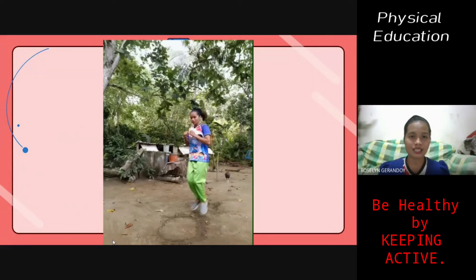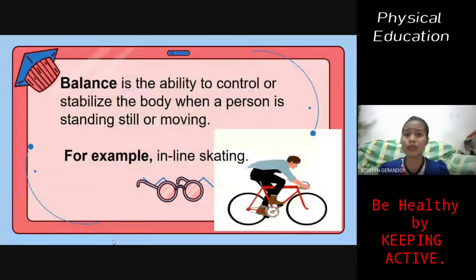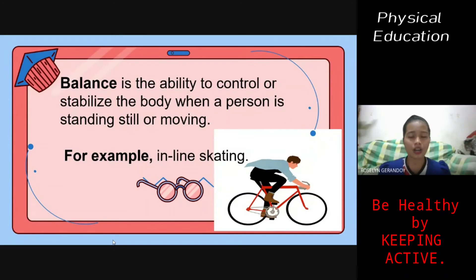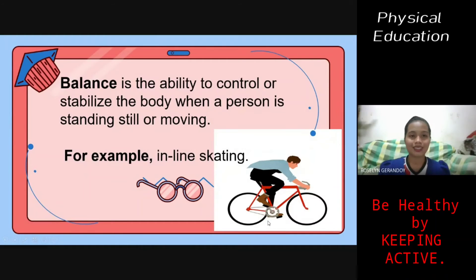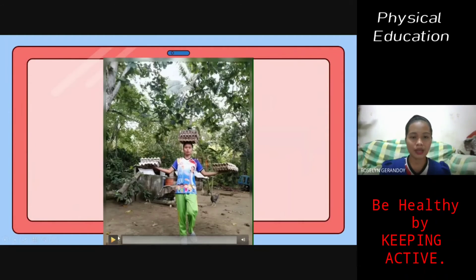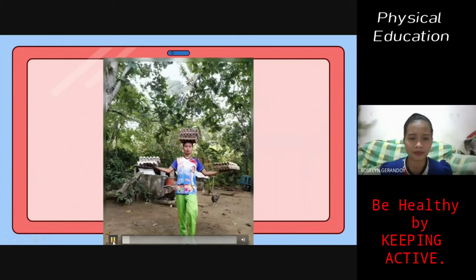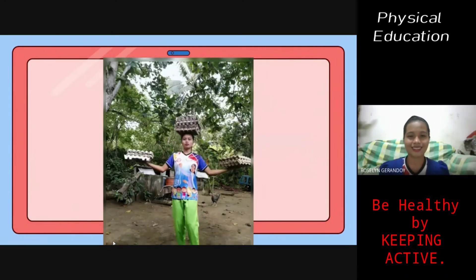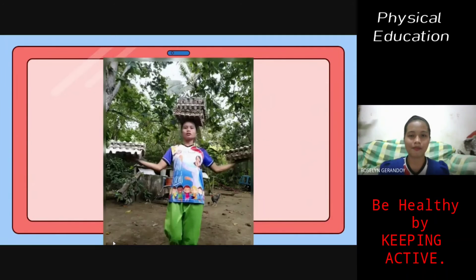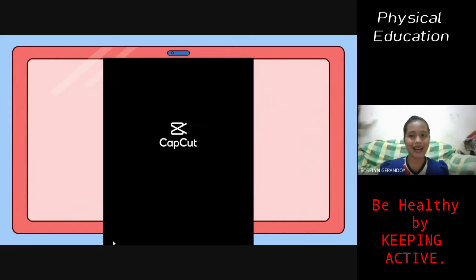Balance is the ability to control or stabilize the body when a person is standing still or moving. For example, inline skating or biking as shown in the GIF. In the video, I carry an egg tray while walking without dropping it, demonstrating balance.